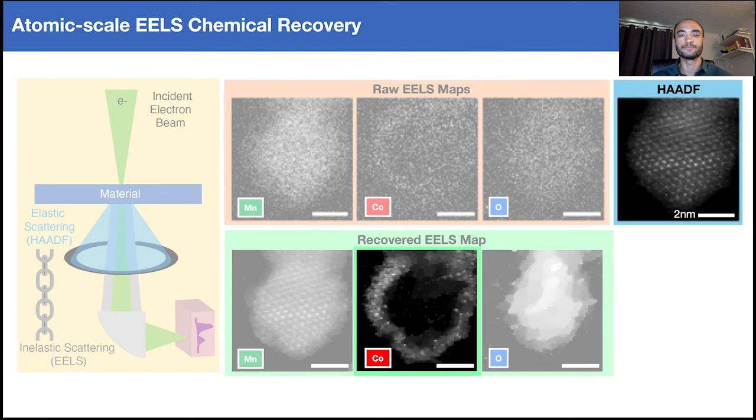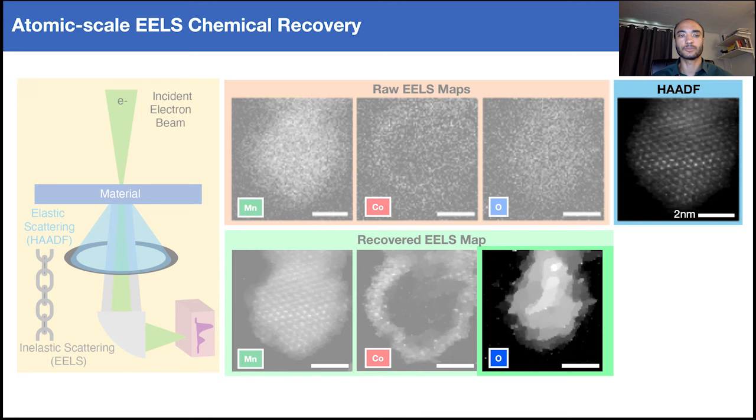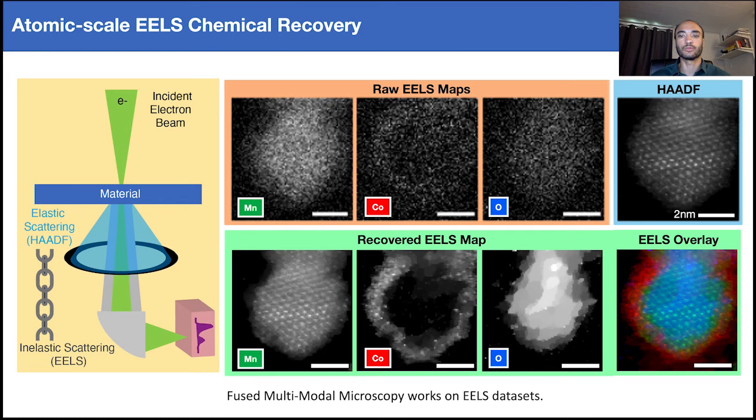Oxygen, while still substantially improved, is mostly benefited from regularization as oxygen scattering in the HAADF is barely visible. Nevertheless, we see the noise floor in all the recovered maps is significantly reduced, and the overlay clearly highlights the core shell structure.